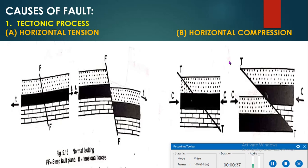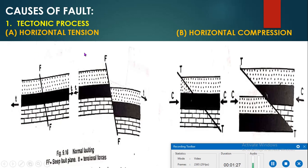In tectonic processes, three forces are acting: horizontal tension, horizontal compression, and vertical movements. In horizontal tension, rocks fail under tension along near-vertical fractures or along shear fractures dipping over 60 degrees. Due to horizontal tension or tensile forces acting on the rock strata, normal faulting is produced.